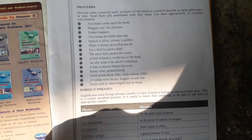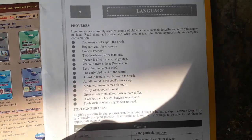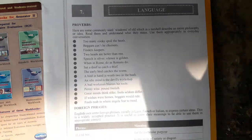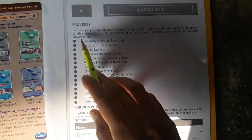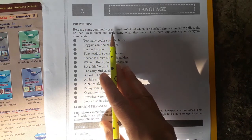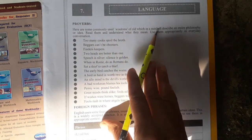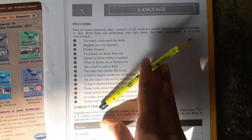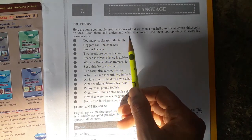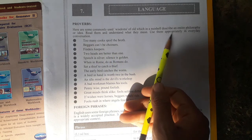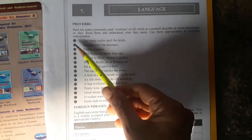Hello friends, my name is Desai Tal. Standard 8th, Subject GK, Chapter 7: Language. Proverbs: Here are some commonly used wisdoms which in a nutshell describe an entire philosophy or idea. Read them, understand what they mean, use them appropriately in everyday conversations.